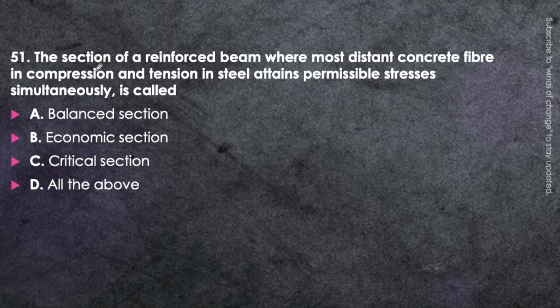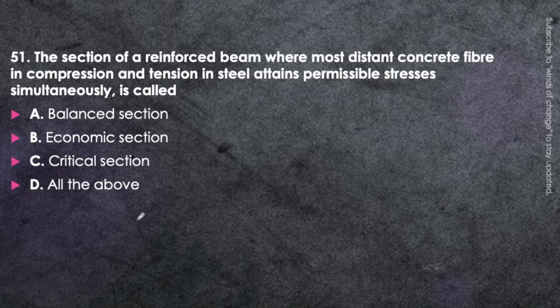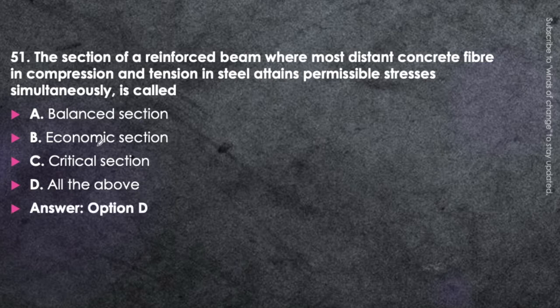Next question: The section of a reinforced beam where the most distant concrete fiber in compression and steel in tension attain permissible stress simultaneously is called the balanced section — also called the economic section or critical section, so all of the above is correct. There are three types of sections: under-reinforced, balanced, and over-reinforced. It is normally called the balanced section.